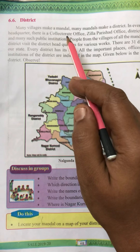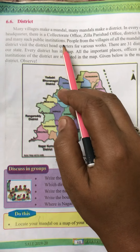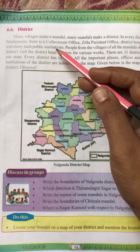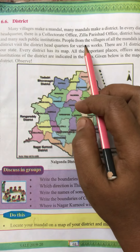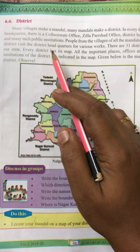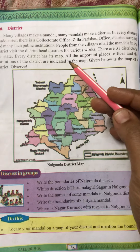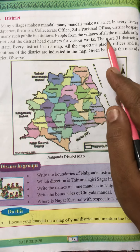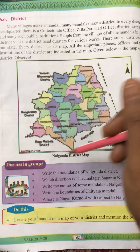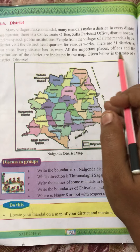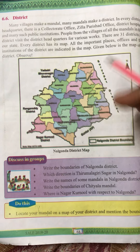In every district headquarter there is a collectorate office, zilla parishad office, district hospital, and many such public institutions. There are 31 districts in our state. Each district has its own map, and all the important places, offices, and institutions of the district are indicated on the map.